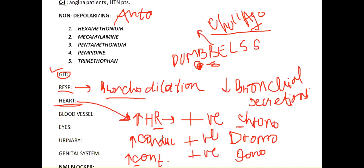So to summarize: increased myocardial contractility is positive inotropic effect, increased heart rate is positive chronotropic effect, and increased conduction velocity is positive dromotropic effect. These effects will increase the cardiac output - your heart will beat fast and all the processes of systole and diastole, heart rate and everything will increase.